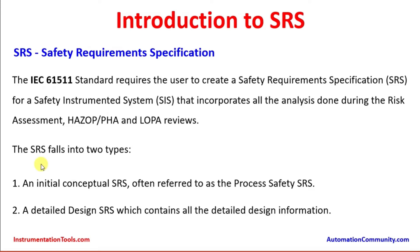The SRS falls into two types. The first is an initial conceptual SRS, often referred to as process safety SRS. The process safety engineers, along with the plant operation engineers or plant designers — meaning licensors involved in the process design — sit together with the automation or instrumentation discipline and maintenance discipline to prepare the SRS. The second is a detailed design SRS which contains all the detailed design information.